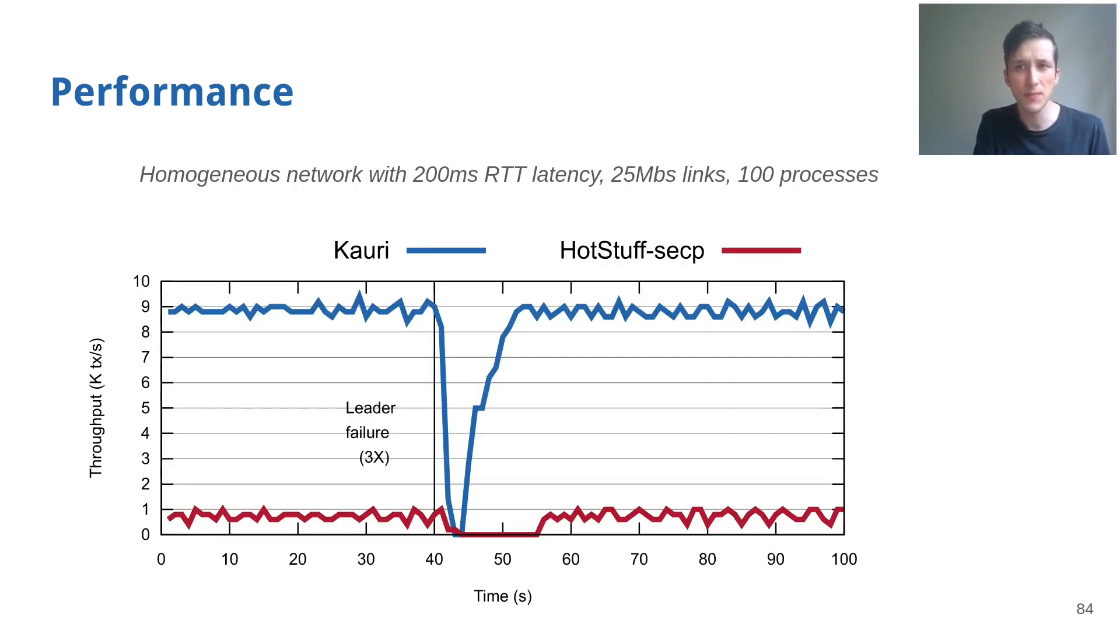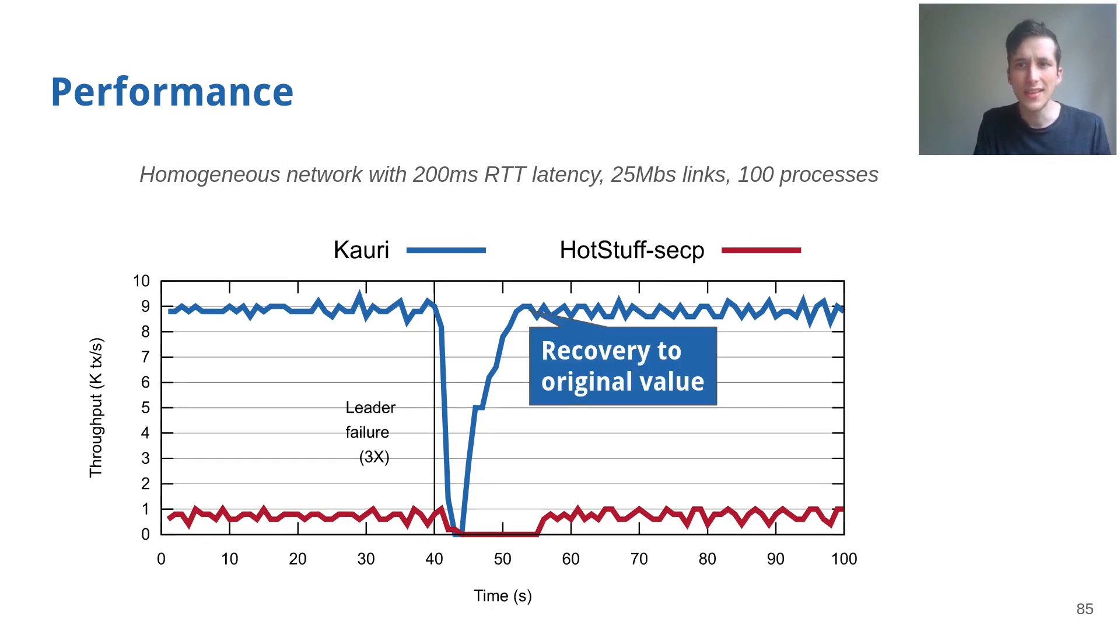In this final experiment, we evaluated the impact of failures on the system. We measured this in the same setting as the previous experiment, with 200 milliseconds round trip time and 25 Mbps links. We configured the system in ways such that the current leader fails after 40 seconds, and consecutively after being elected, the next two leaders fail in a similar manner. At this considerably low number of failures, we see that Kauri not only reconfigures in a similar time period as HotStuff, but is also able to scale pipelining back up to the original value to attain similar throughput values as before.